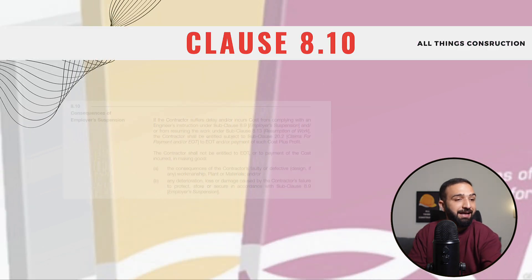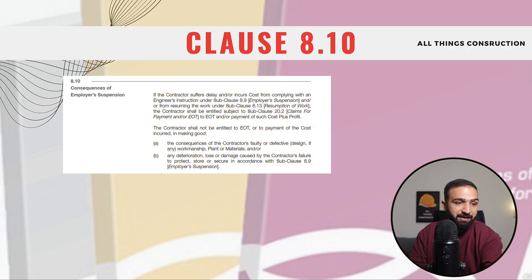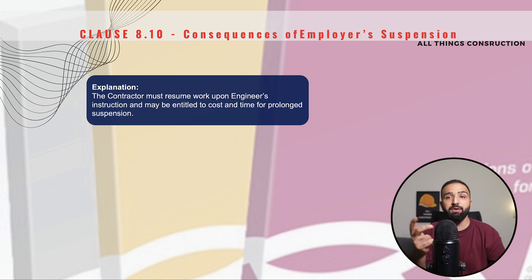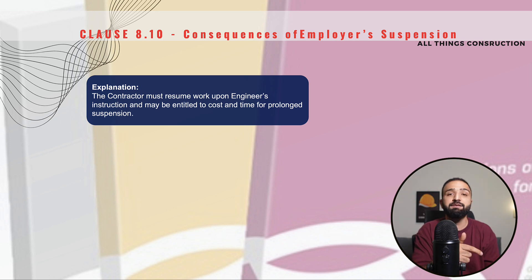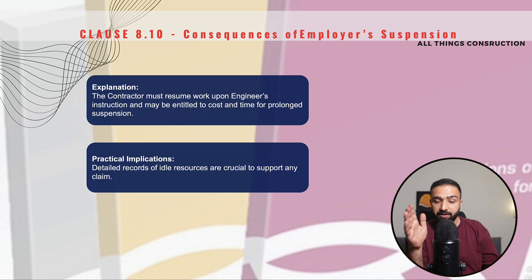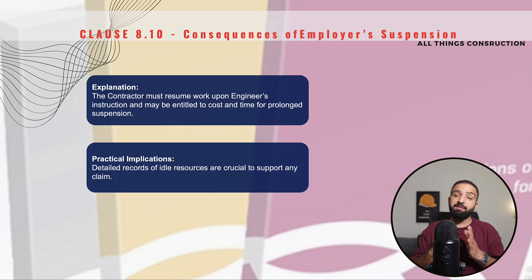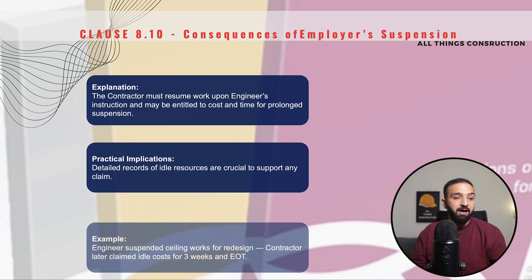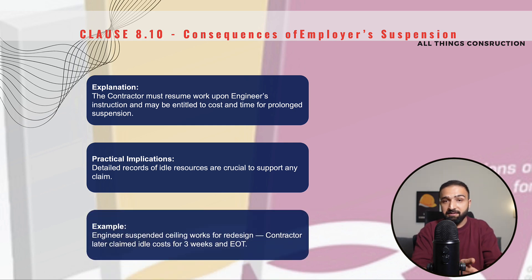Clause 8.10 is Consequences of Employer's Suspension. Basically, this clause states that if we suffer delay or cost impact due to suspension, we are entitled to recovering these costs, especially if the cause of the suspension had nothing to do with us. It is very important that during the suspension period, we contractors must record all idle resources or any other impact we are incurring in order to substantiate our claims.